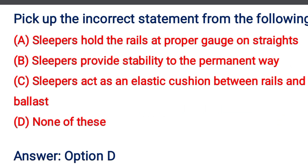Next question: Pick up the incorrect statement from the following — Option A: sleepers hold the rails at the proper gauge on the straights, Option B: sleepers provide the stability to the permanent way, Option C: sleepers act as an elastic cushion between the rails and ballast, Option D: None of the above. The correct answer is Option D: None of the above, because all the above points are correct.